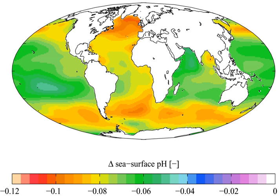The carbon cycle involves both organic compounds such as cellulose and inorganic carbon compounds such as carbon dioxide, carbonate ion, and bicarbonate ion. The inorganic compounds are particularly relevant when discussing ocean acidification, for they include many forms of dissolved CO2 present in the Earth's oceans. When CO2 dissolves, it reacts with water to form a balance of ionic and non-ionic chemical species: dissolved free carbon dioxide, carbonic acid, bicarbonate and carbonate. The ratio of these species depends on factors such as seawater temperature, pressure and salinity.